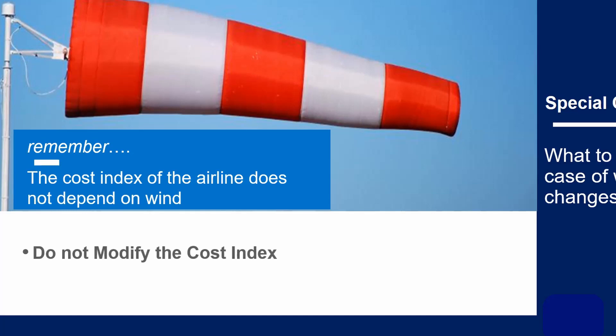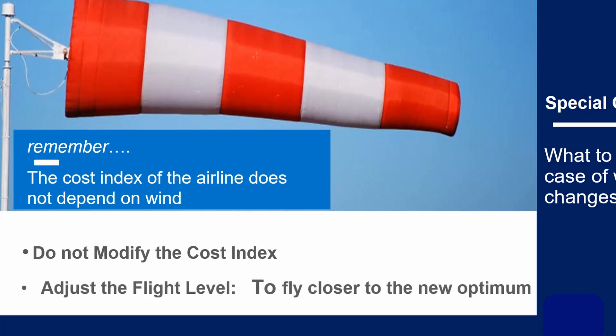So the answer is, if the winds you encounter differ from those on the flight plan, fly at Cost Index, and simply, if needed, deviate from the flight plan flight levels to fly as close as possible to optimum flight level. And check your fuel on board at destination.